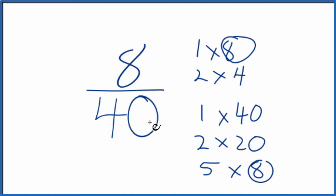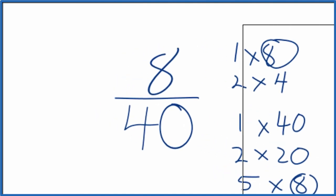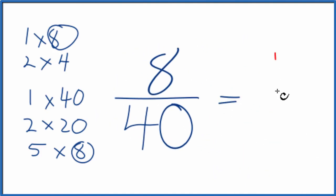So you divide 8 by 8 and 40 by 8. Let's move these. 8 divided by 8 is 1. 40 divided by 8 is 5. And you have another way to simplify the fraction 8 fortieths. You end up with 1 fifth.